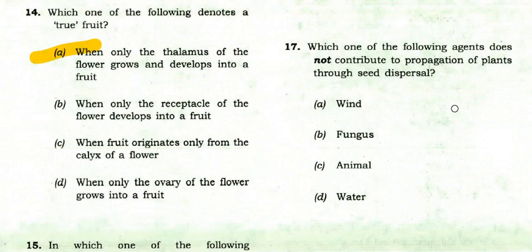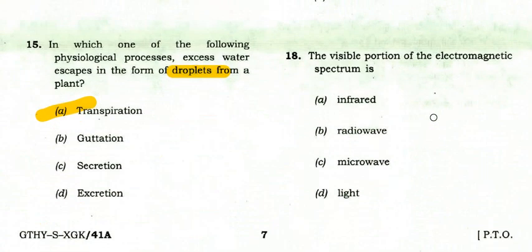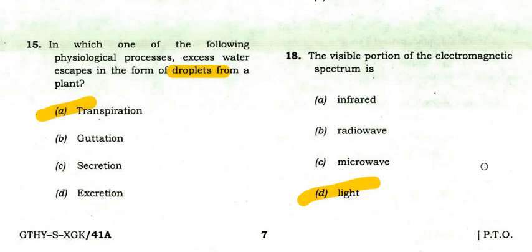Which of the following agents does not contribute to propagation of plants through seed dispersal? The right option is fungus. The visible portion of the electromagnetic spectrum — light is the visible portion of the electromagnetic spectrum.